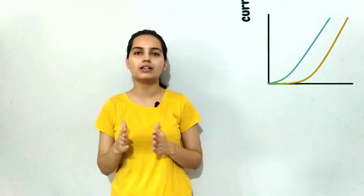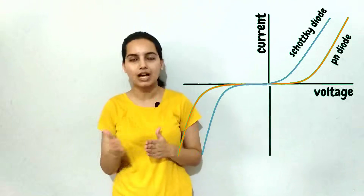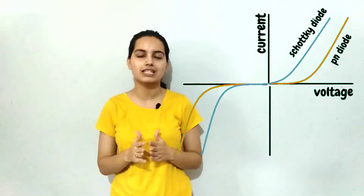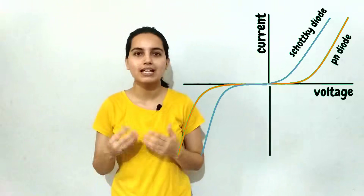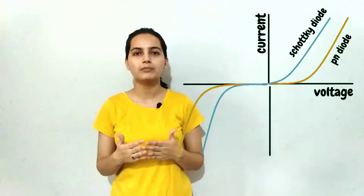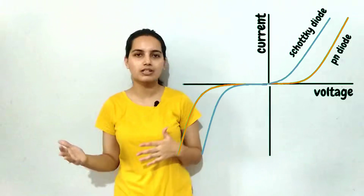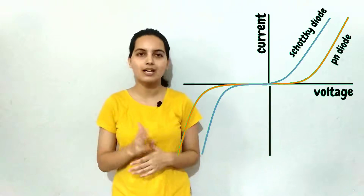As you can see, the characteristic graphs of the PN junction diode and Schottky diode are quite the same. The only difference is that for the Schottky diode, the forward threshold voltage is lower than that of the PN junction diode.